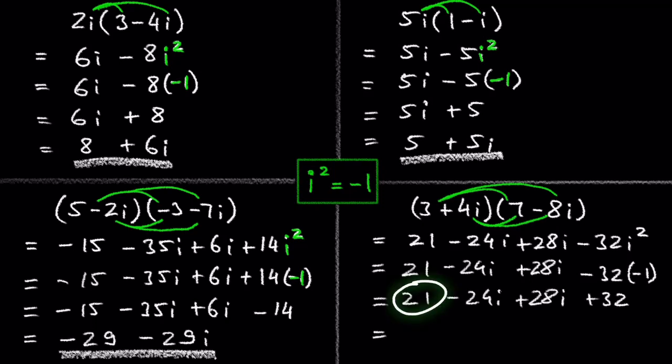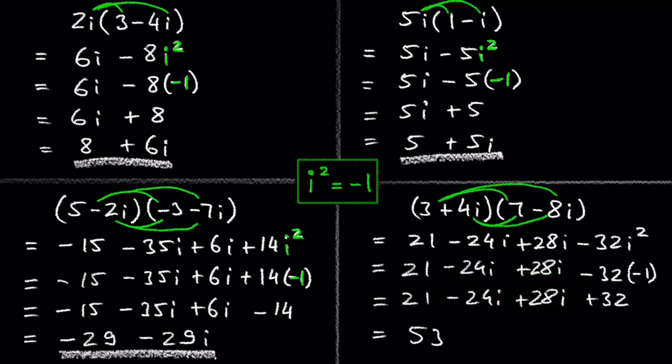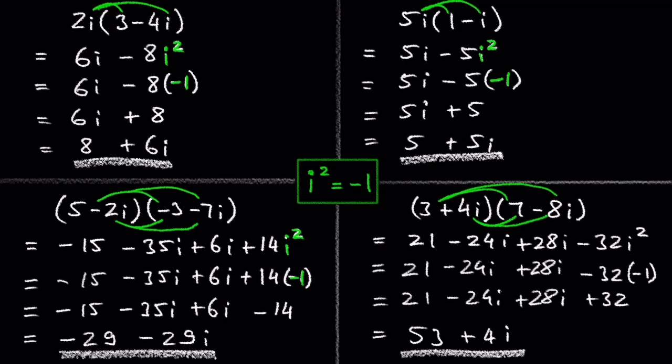21 and 32 is 53, and 28i minus 24i is 4i. And we are done with this problem.